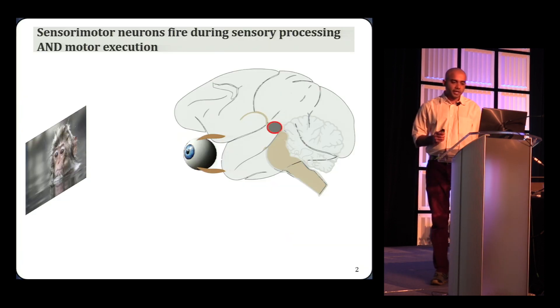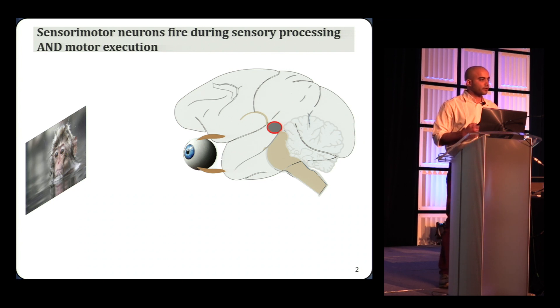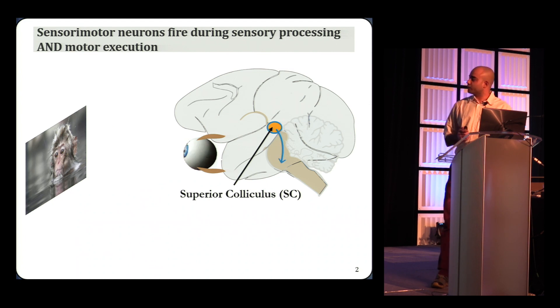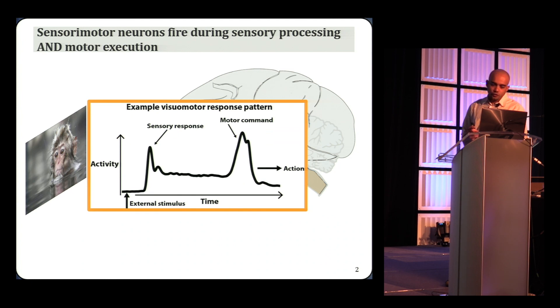The study was motivated by the sensory motor decoding problem, which is the need for a decoder to differentiate sensory responses in the brain from movement commands. For example, as we look around to scan our visual world, light enters the eye and is relayed to the brain where it's processed in visual areas and sensory motor structures like the superior colliculus in the midbrain. These brain areas communicate directly with the brain stem, which issues the final command to move the eyes to a different location.